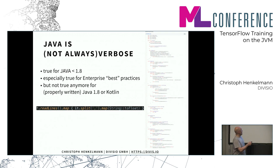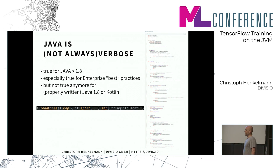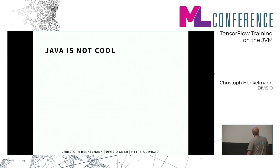Java is not always verbose. If you write proper Java 1.8 you have a very nice functional style, or as we do it, we use Kotlin. In Kotlin, this simple example reads a CSV file and turns it into floats in just one line — read the file, turn the lines into floats. You don't get this much shorter in Python.